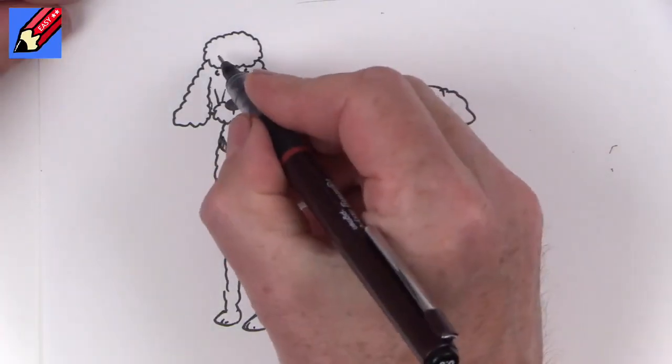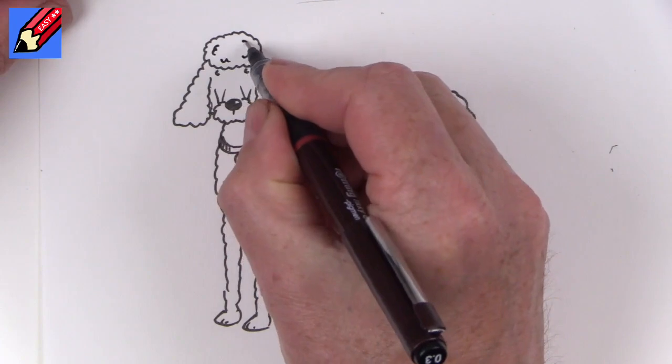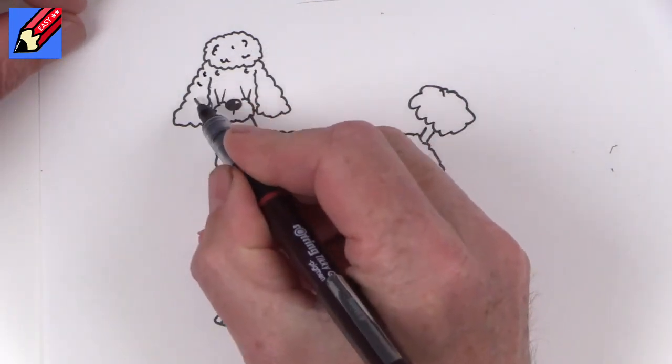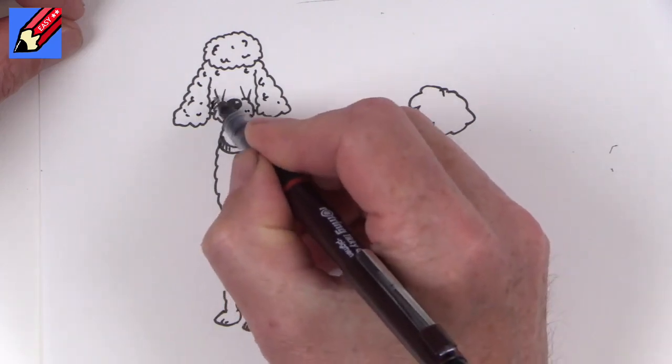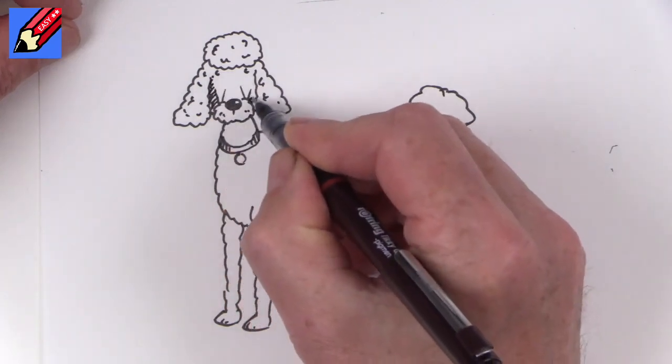And then what we need to do is to add a bit more poodle-ness to it. And that poodle-ness is all in the fur. Which is all kind of, we can make that a bit darker up there like that.